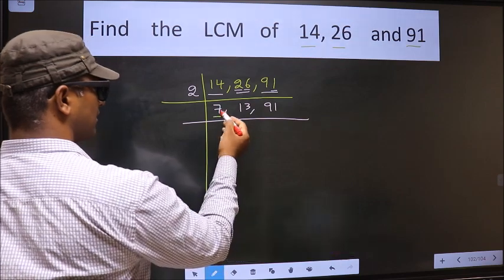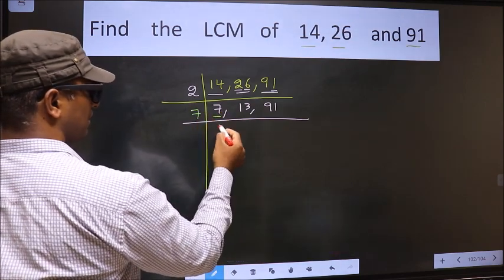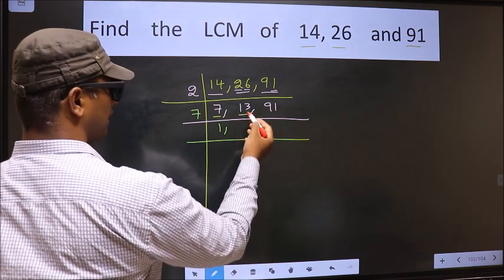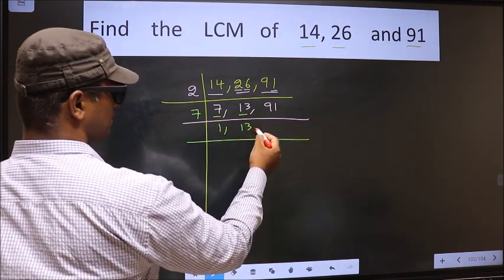Now here we have 7. 7 is a prime number. So 7 times 1 is 7. The other number 13, not divisible by 7. So we write it down as it is.